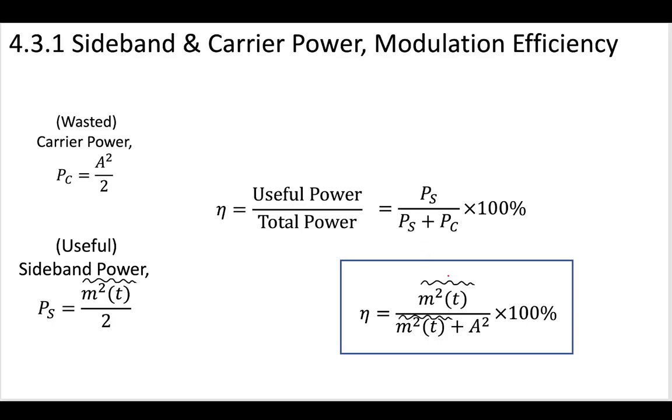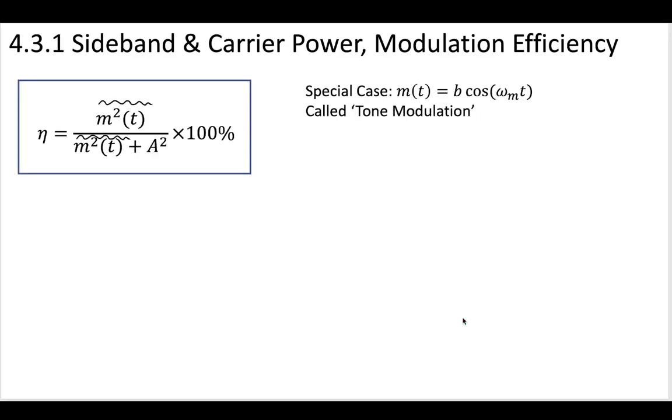And furthering it even more for this case, we can have the message squared, the time average of the message on top, because this is the useful power. The useful power is coming from that message power signal divided by the time average mean of the message squared plus this A squared, the amplitude of that carrier wave.